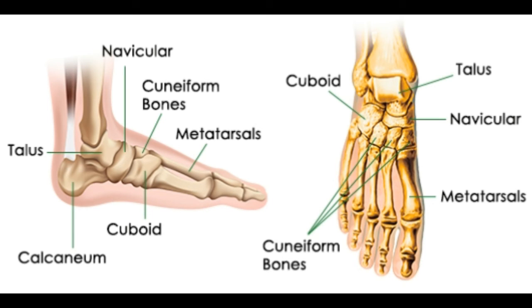Metatarsal bones are situated exactly between the tarsal bones and phalanges. There are in total five bones which fall under the metatarsal bones category. These bones in the human body are known as the first, second, third, fourth, and fifth metatarsal bones.